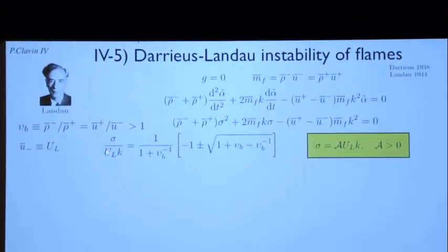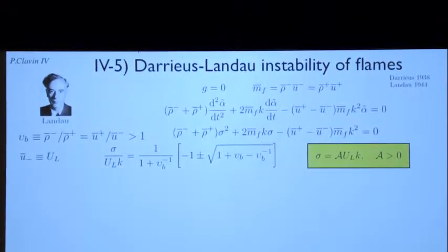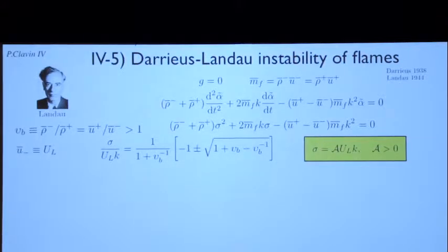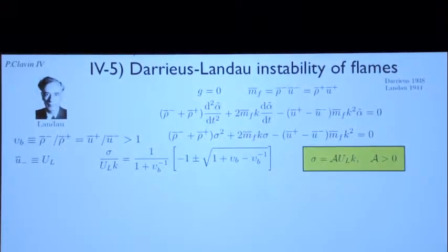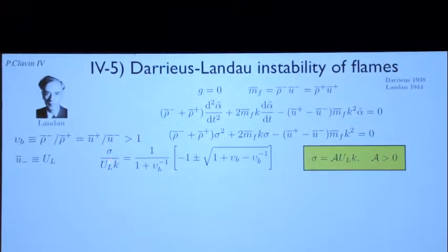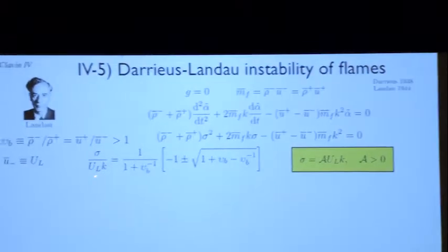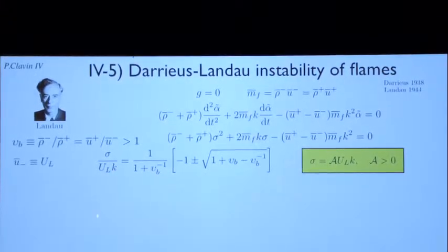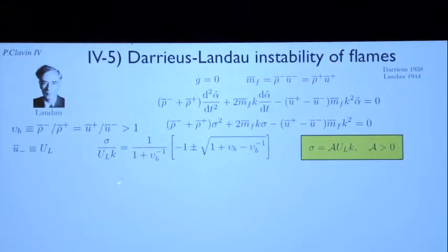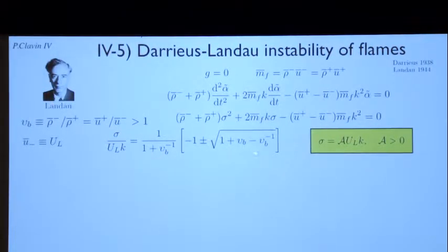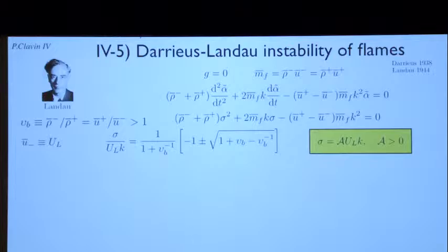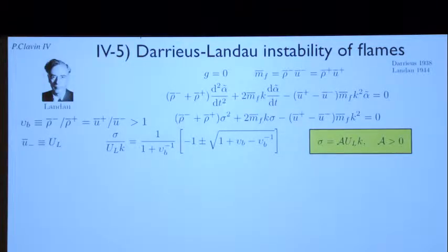In terms of sigma divided by U_L k — as I told you, you cannot have another grouping. For dimensional analysis, you end up with a number which is the growth rate divided by the flow velocity times the wave number. The wave number is given, and you ask for the growth rate and obtain this number. There is one stable solution I am not interested in; I am interested in the unstable solution, which carries a plus sign here.